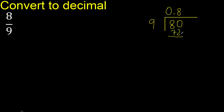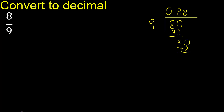80 minus 72 is 8. Next, here there is no number, therefore complete — always complete with 0. 80: 9 multiplied by 8 is 72, subtract. Complete, multiplied by 8 is 72.